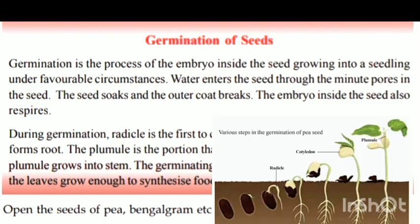Germination of seeds — seeds are called germination. Germination is the process of the embryo inside the seed growing into seedlings under favourable circumstances. The seedlings are called germination.